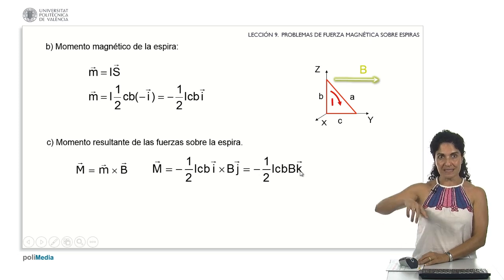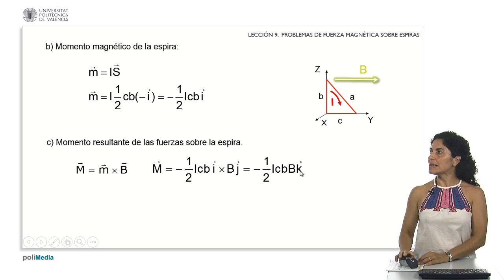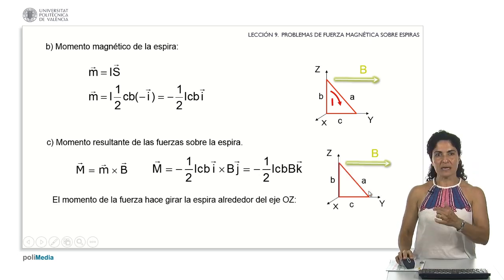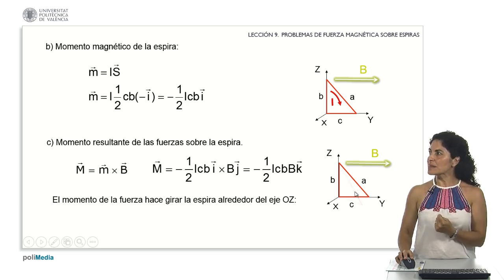It's rotating in the negative Z axis direction of the vector. Therefore, if I observe the movement of my triangle over various time intervals from its initial position, it is going to be rotating in this direction.